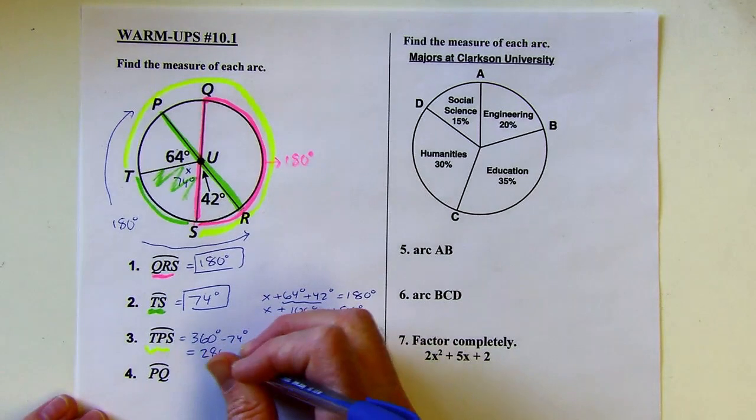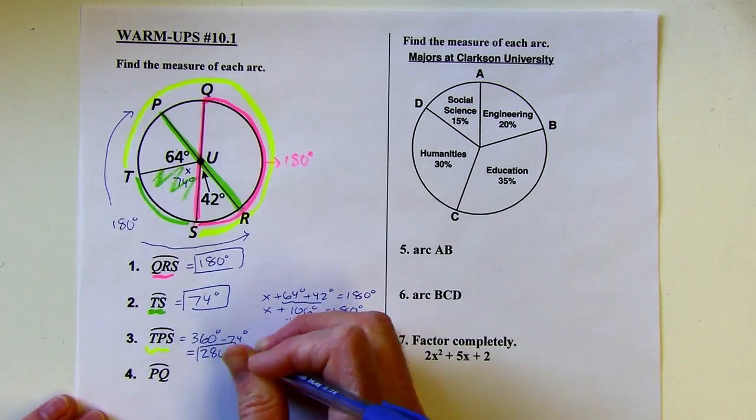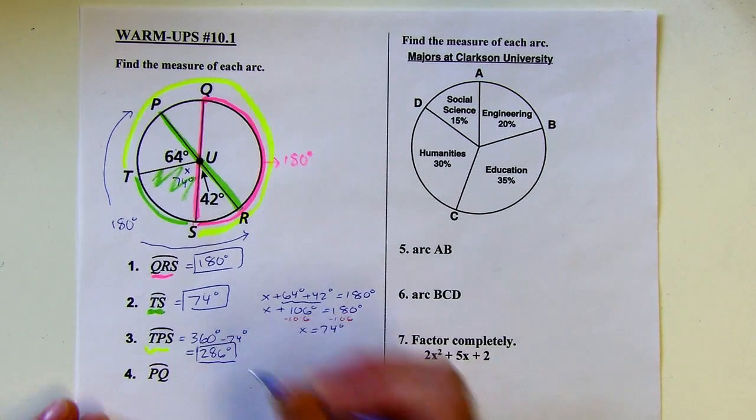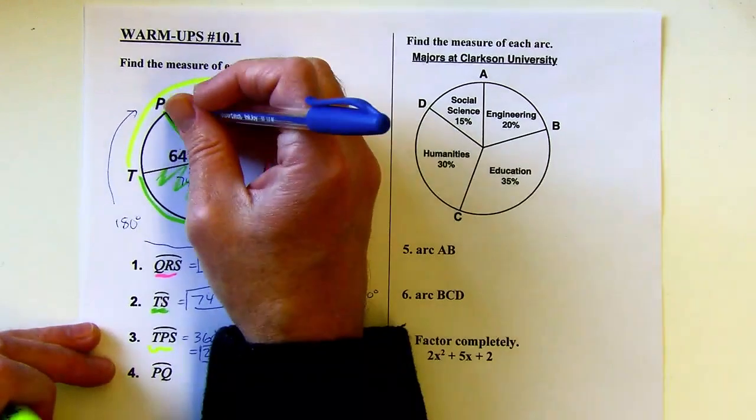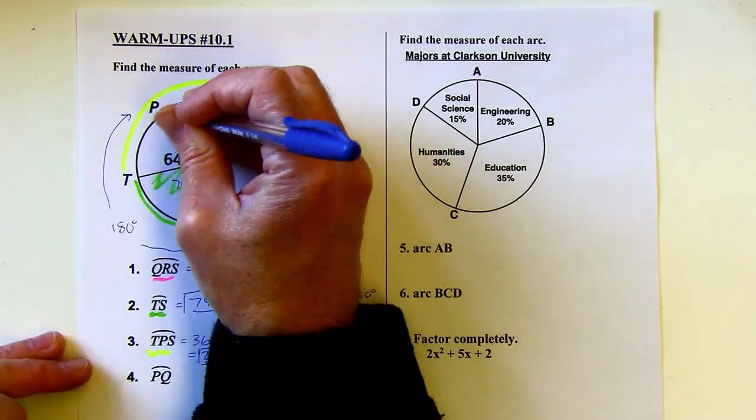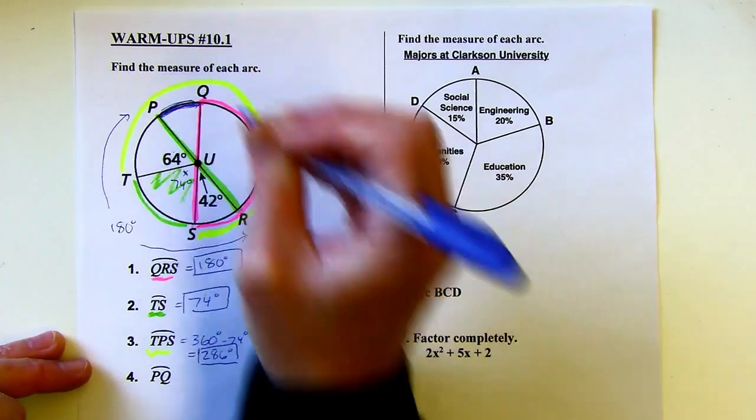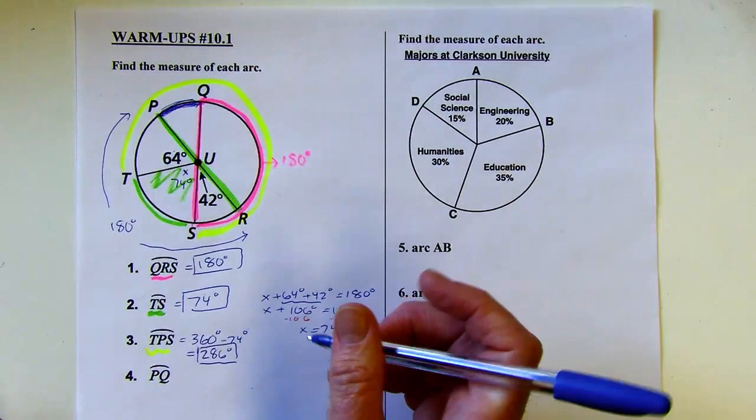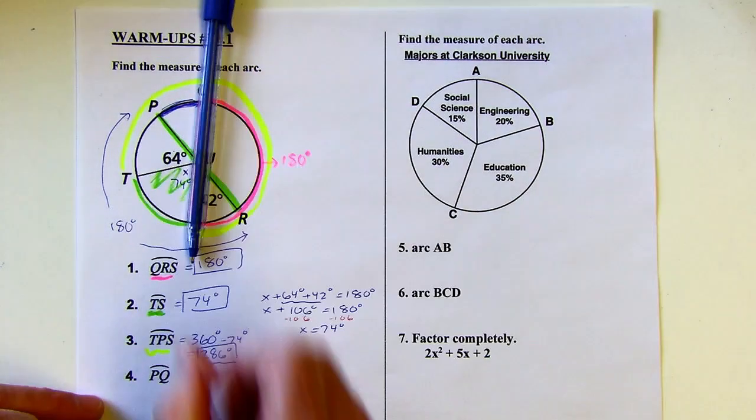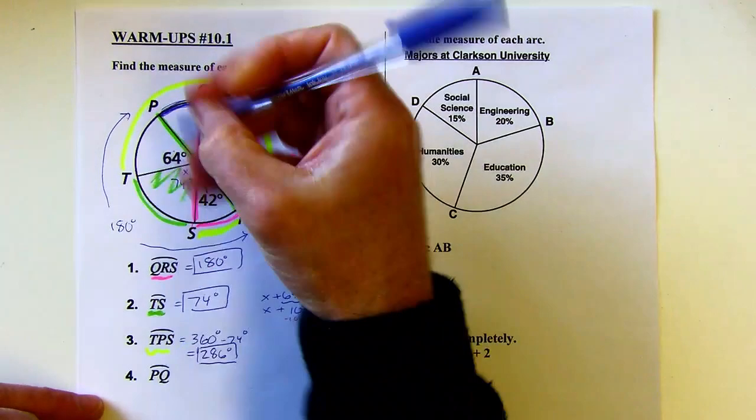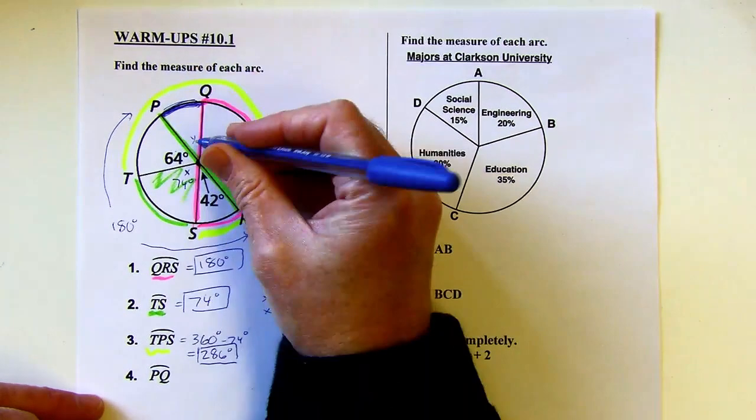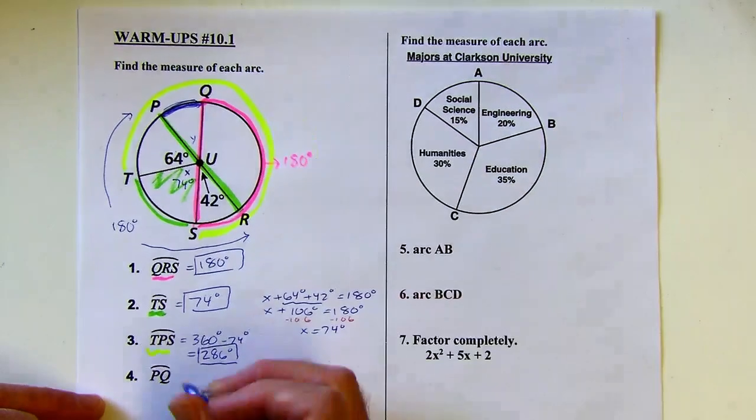286, sorry, excuse me, degrees. All right. And then PQ, so PQ is this slice in here. Yeah, I'm out of different colors, so I'll just use this, that's that piece. What I can do is use this diameter again, so this whole diameter is 180 degrees. So if I call this Y here, I can say Y plus 64 plus 74 is going to equal 180.